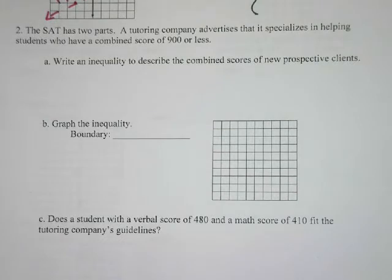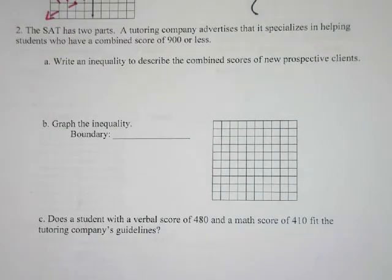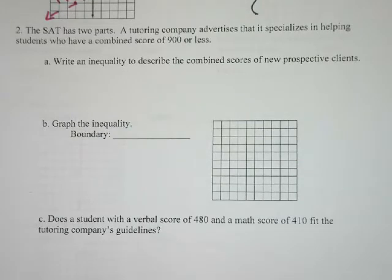Number two says: the SAT has two parts. A tutoring company advertises that it specializes in helping students who have a combined score of 900 or less. Write an inequality to describe the combined scores of new prospective clients. There's a math score and a verbal or English score, right? We need to write an inequality to talk about that.